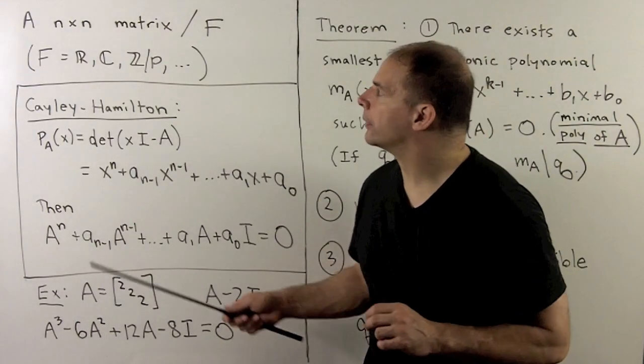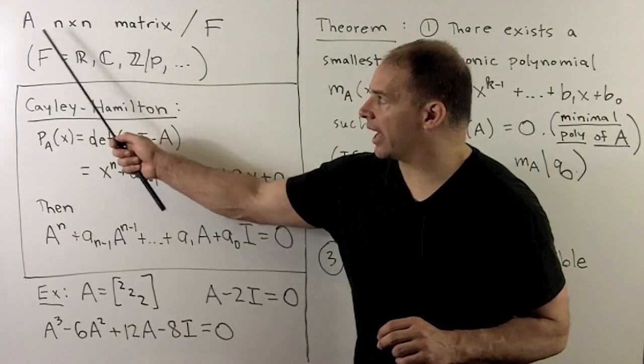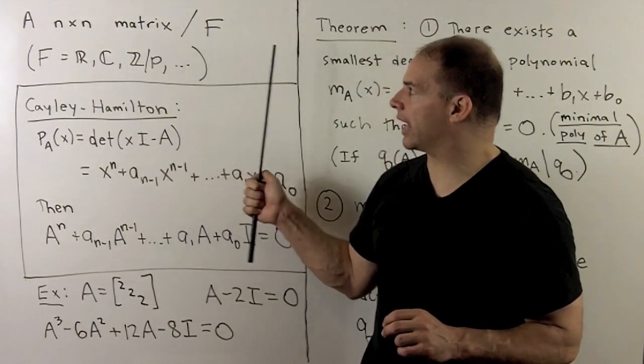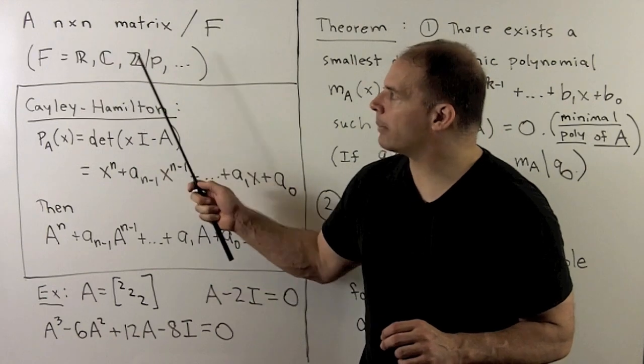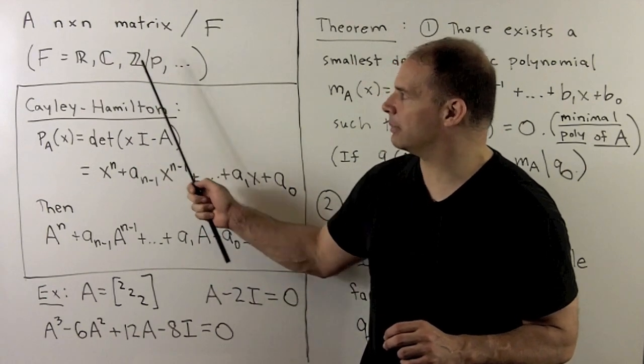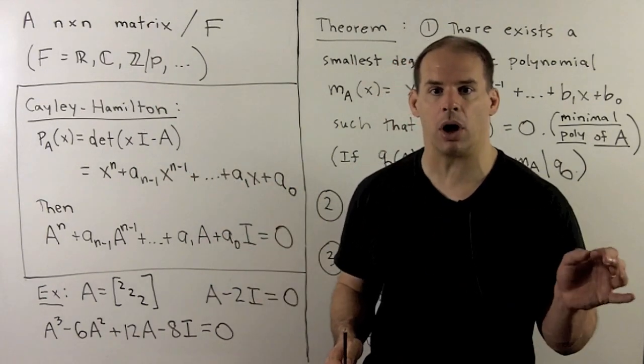Now, we start with an n-by-n matrix A with entries in some field F. So F can be the real numbers, the complex numbers, Z mod p where p is a prime, and so on.